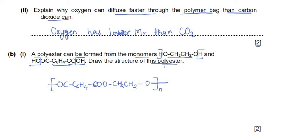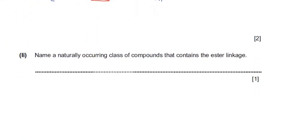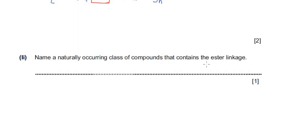This polymer is called a polyester because it contains an ester linkage. The next sub-question asks to name a naturally occurring class of compounds that contains ester linkage. The answer is fats and lipids, which carry the ester linkage. That answer carries one mark. We have now discussed three big questions with many sub-questions about polymers for the IGCSE topic.